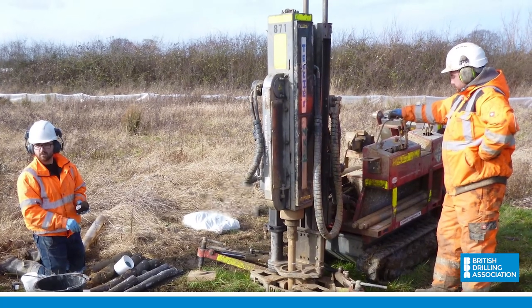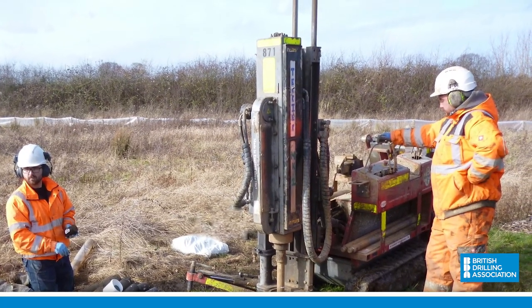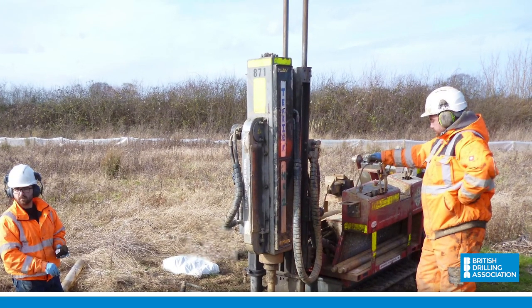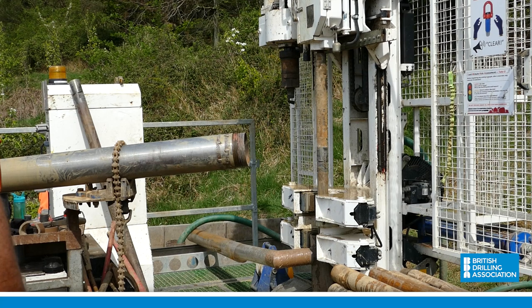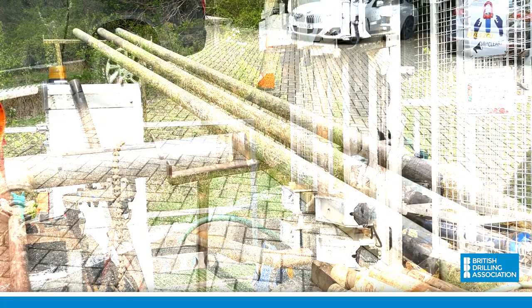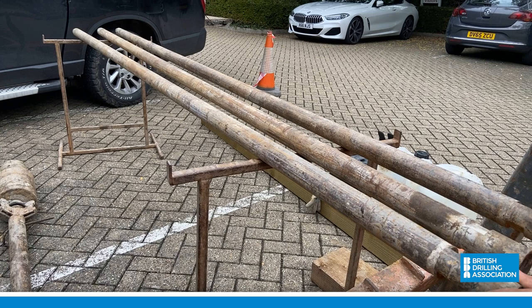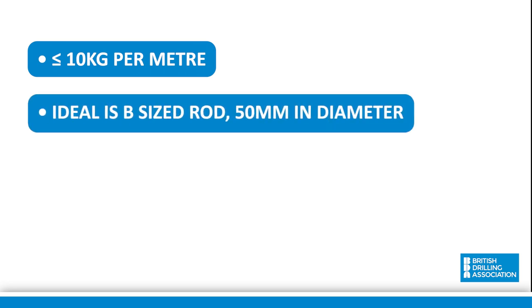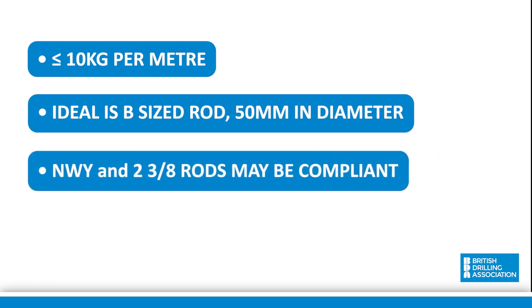The second is the hydraulic hammer, more commonly found on rotary and dynamic sampling machines. This method uses a chain-driven mechanism. The mechanism lifts the weight to the height required, where it is then dropped. In addition to a hammer, the SPT must be carried out using the correct size of drill rod. The rods must not exceed 10kg per metre in weight, and the ideal rod is a B-sized rod of around 50mm diameter. Larger diameter rods such as NWY and 2-3/8ths may be acceptable, but the weight must be checked to ensure they comply with the relevant standard.